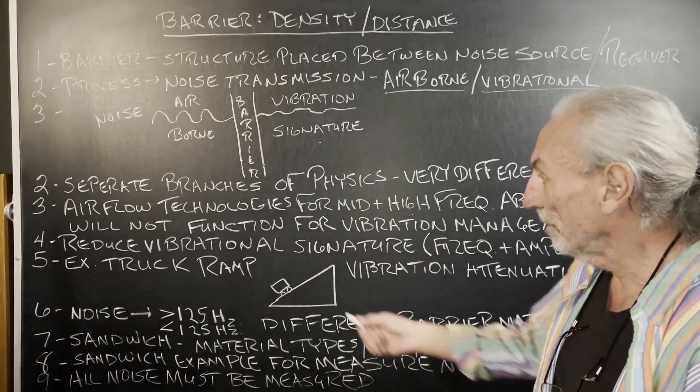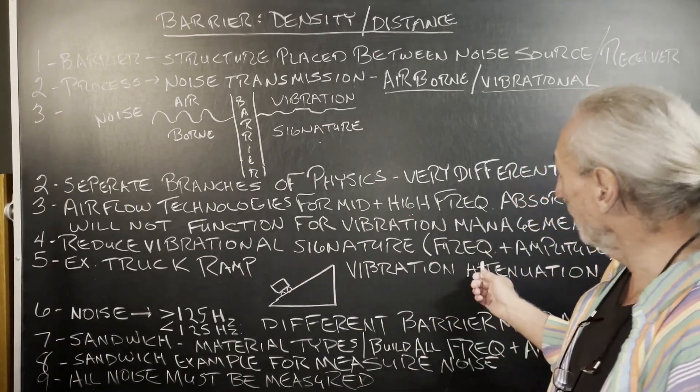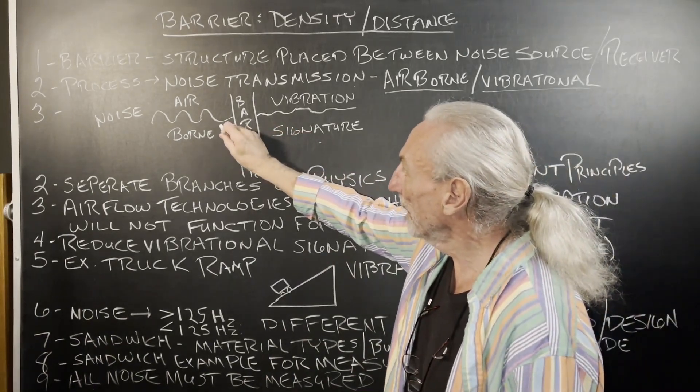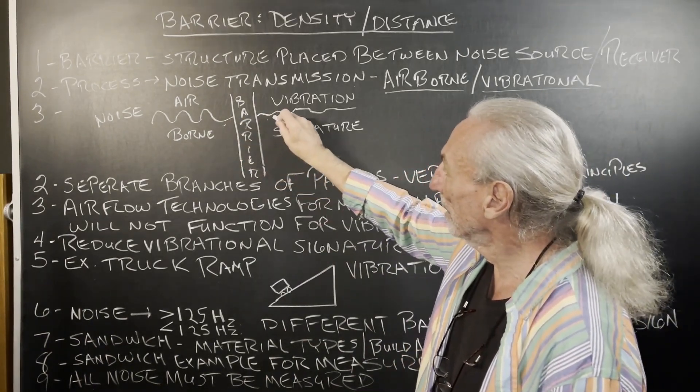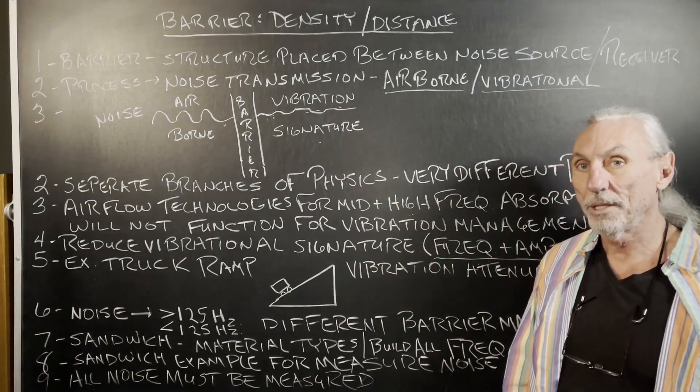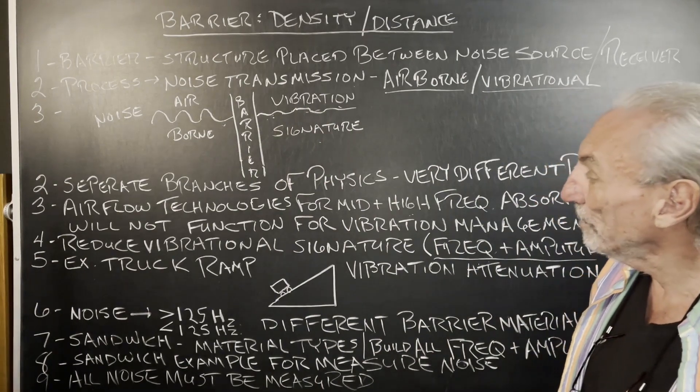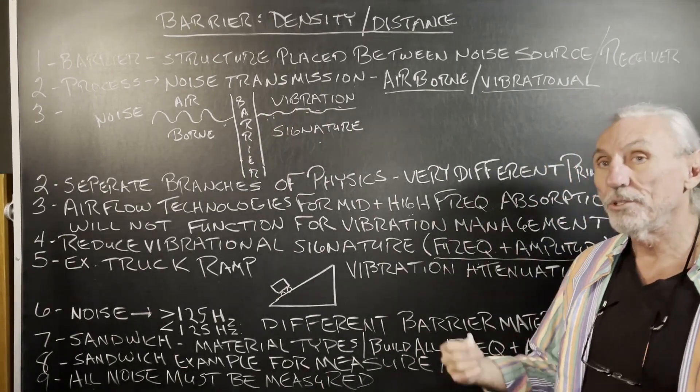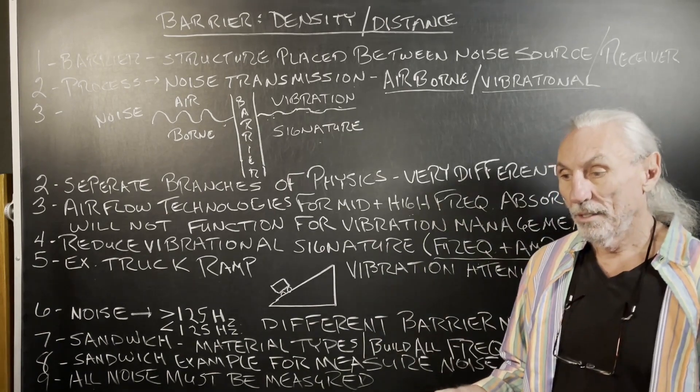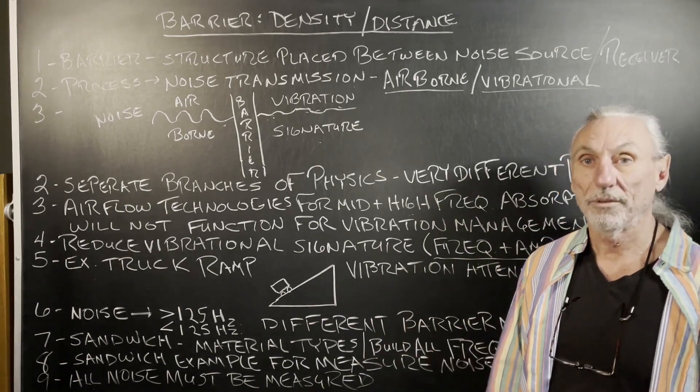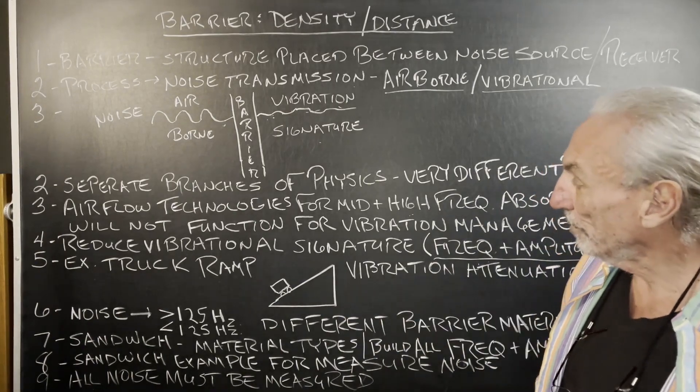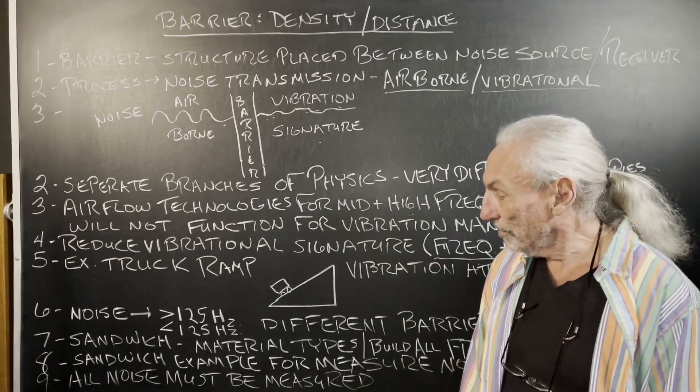Reduce vibrational signature, the frequency and amplitude of the signature. I want to take this big snake, turn it into a little worm if you want to look at big to little in that direction. So how do we do it? We've got to reduce vibrations. How do we reduce vibrations? Well, there's isolators. There's all kinds of devices that can help us do that. Here's a good example for this kind of situation.